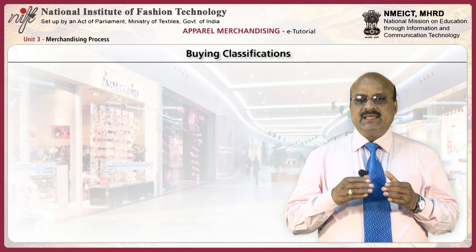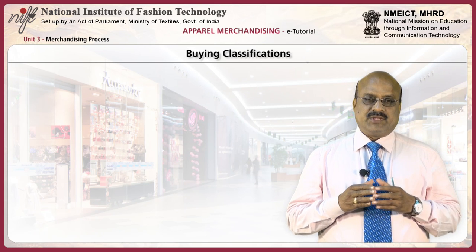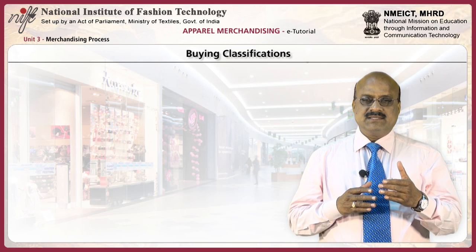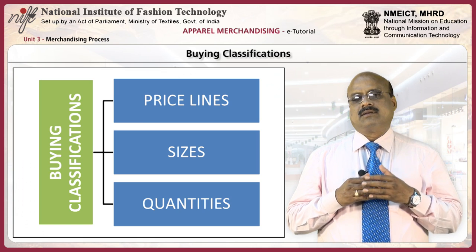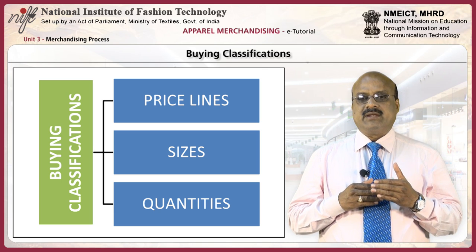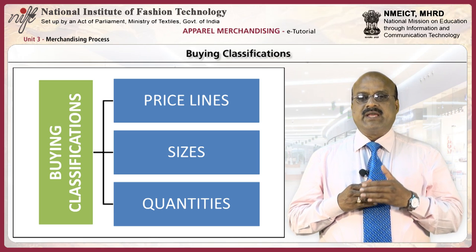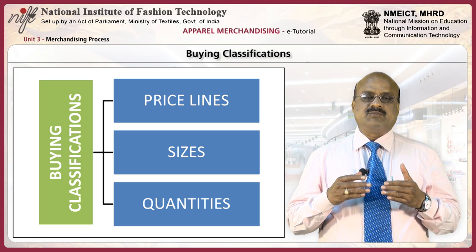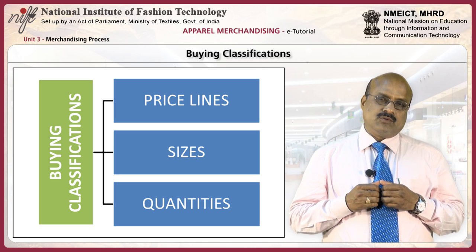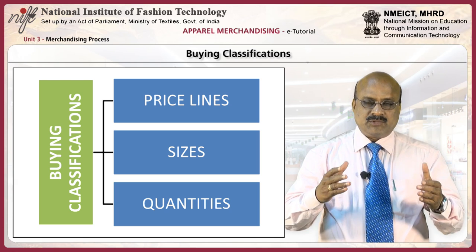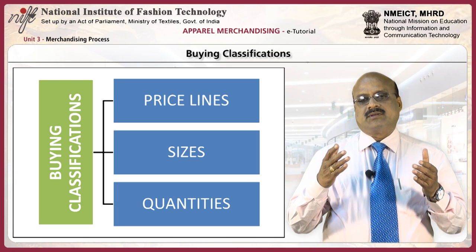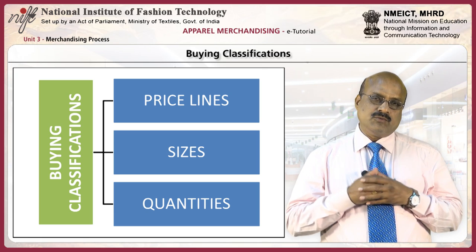Buying is done by these classifications: price lines, sizes, quantities. Buying is dependent on customer demand and estimated by the study of customer wants and needs. A successful buyer knows what a customer wants, when they want it and how much they want to pay for the goods.